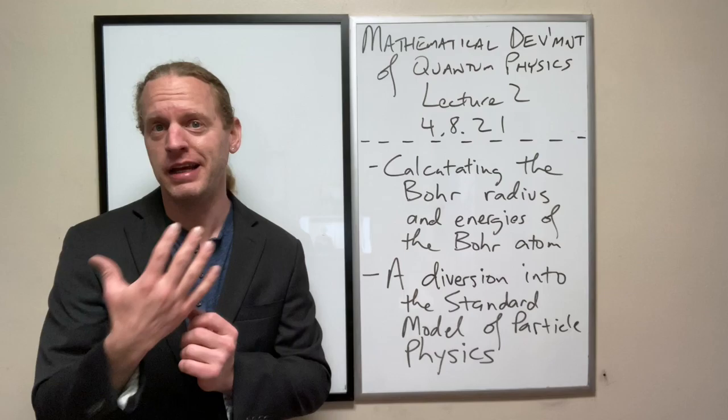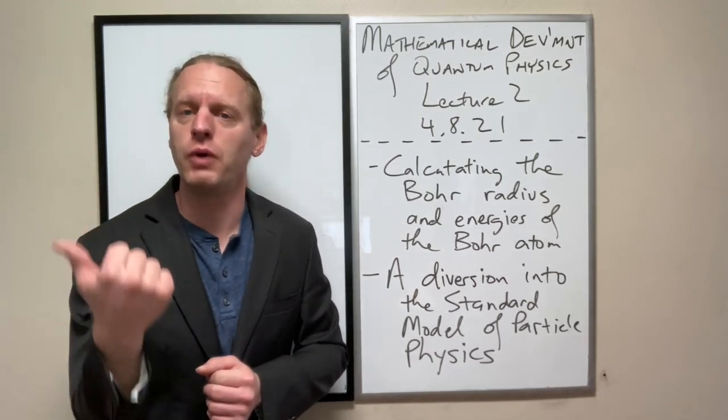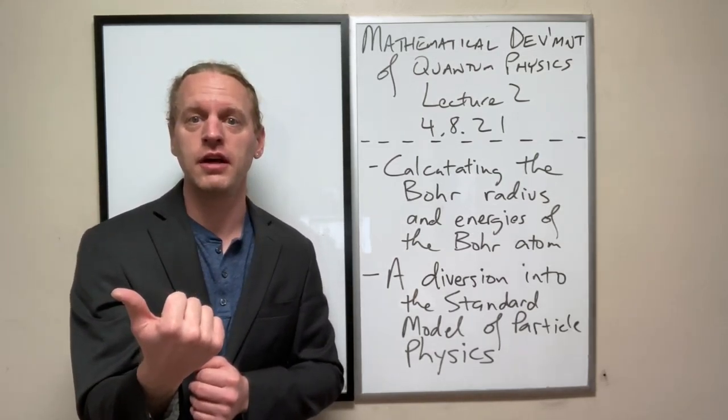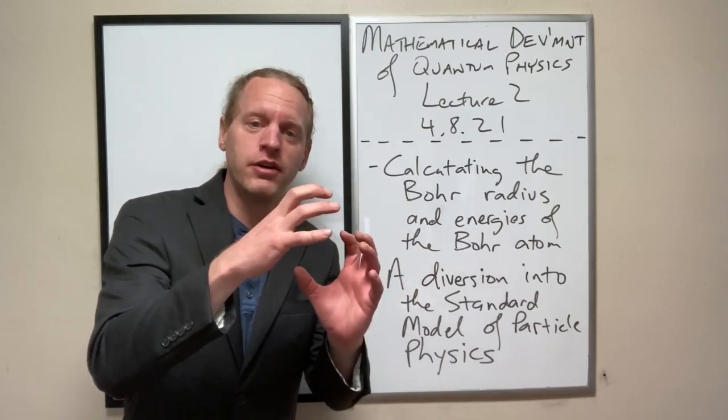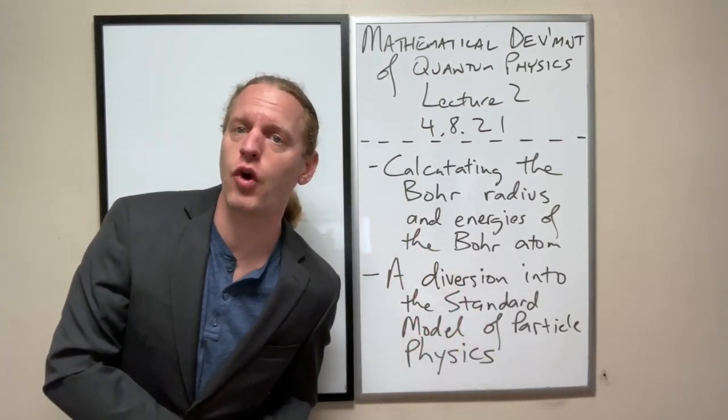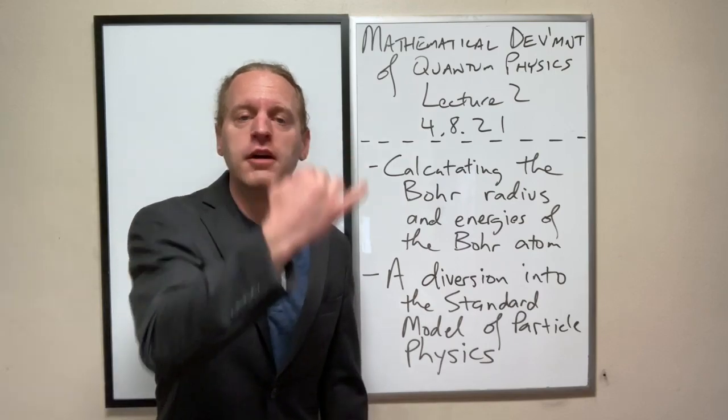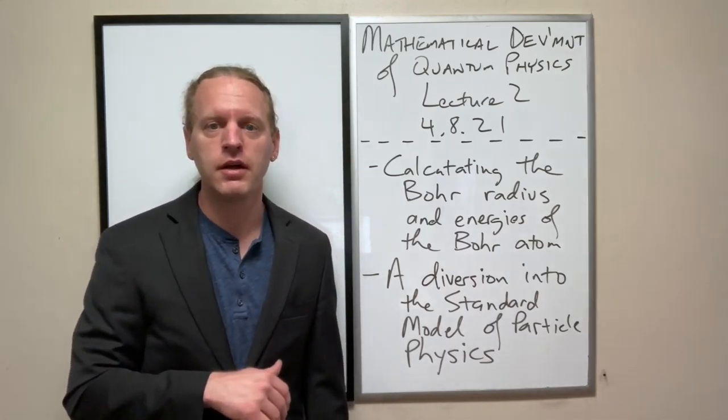So Bohr built up his model based on, I had mentioned his premise was that if angular momentum is quantized, then naturally those orbitals are precisely the same as the orbitals where you have that precise number of de Broglie wavelengths.